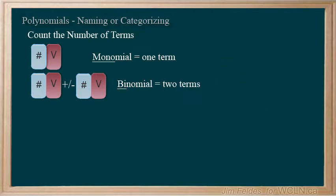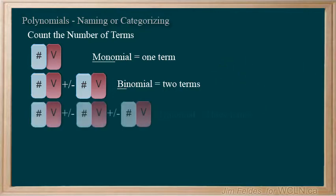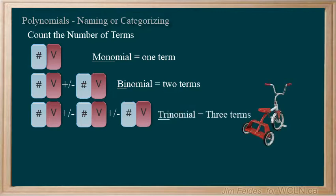And for a polynomial with three terms, we use the prefix tri, like tricycle or triangle.